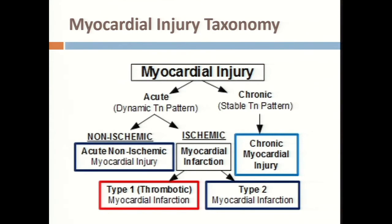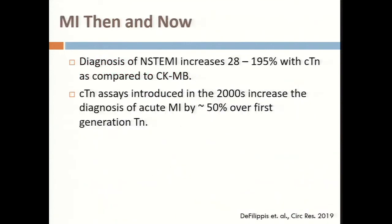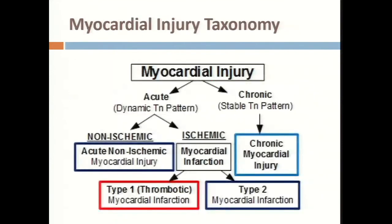The first step in defining myocardial injury is determining whether it's an acute or chronic injury — basically a dynamic rise and fall in troponin versus a stable pattern. If it's stable, you've made your diagnosis: chronic myocardial injury. If it's an acute rise and fall, you next need to determine whether this is from an ischemic or non-ischemic cause. Ischemia means myocardium not receiving enough oxygen — from demand or supply — and an ischemic myocardial injury is termed myocardial infarction.